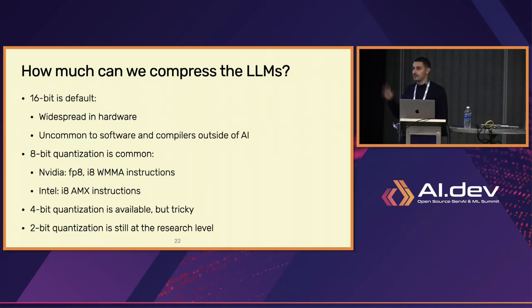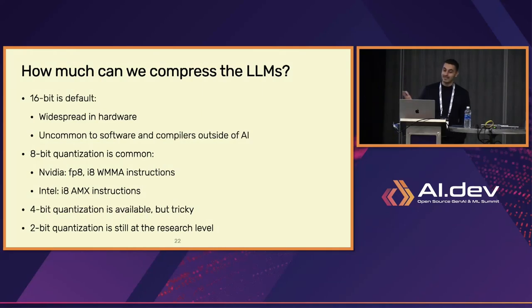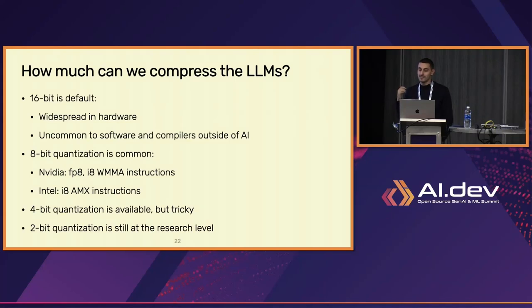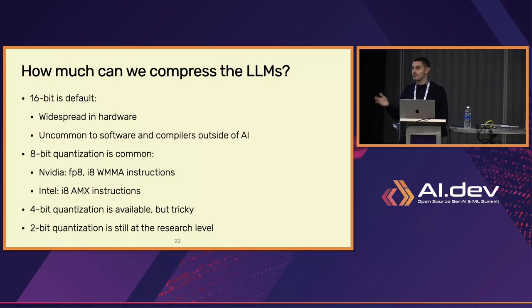Everything related to quantization and its availability in software is literally happening as we speak. Today, from a systems engineer's perspective, 16-bit floating-point numbers are kind of default — if you use PyTorch or any other major framework, 16-bit floats are supported everywhere. Except for AI, most other places don't support 16-bit numbers. uSearch has bindings to 10 programming languages, and every time you implement a binding to a new language, you discover limitations. In C++, C, Java, or almost any other language, half-precision floating-point numbers are not really standardized, and compilers are very bad at generating them.